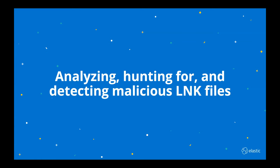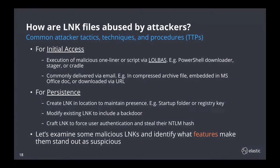In this next section, we'll review some of the ways attackers use malicious link files to achieve their objectives. I'll walk through an analysis of some malicious examples and point out the features that make them stand out as suspicious. Weaponized link files are commonly used to obtain initial access or to maintain persistence in a victim's environment. To gain initial access, attackers will often craft a link file to execute a malicious one-liner or script, usually leveraging a living-off-the-land binary like PowerShell or the command prompt — a common example would be a PowerShell one-liner to download some malware.